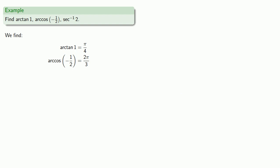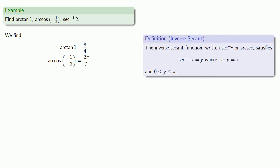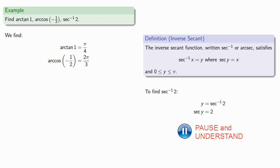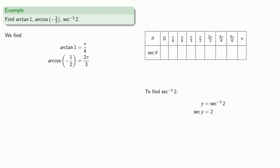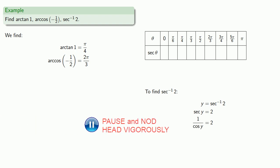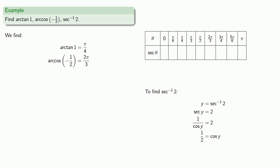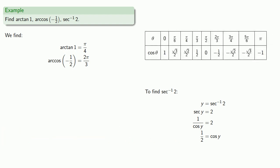Inverse secant: to find the inverse secant of 2, y is the inverse secant of 2 if secant of y is equal to 2. We recall that secant is 1 over cosine. Rearranging, that tells us cosine of y is equal to 1/2. Looking at our cosine values, cosine of y is 1/2 when y is equal to pi thirds. So the inverse secant of 2 is pi thirds.